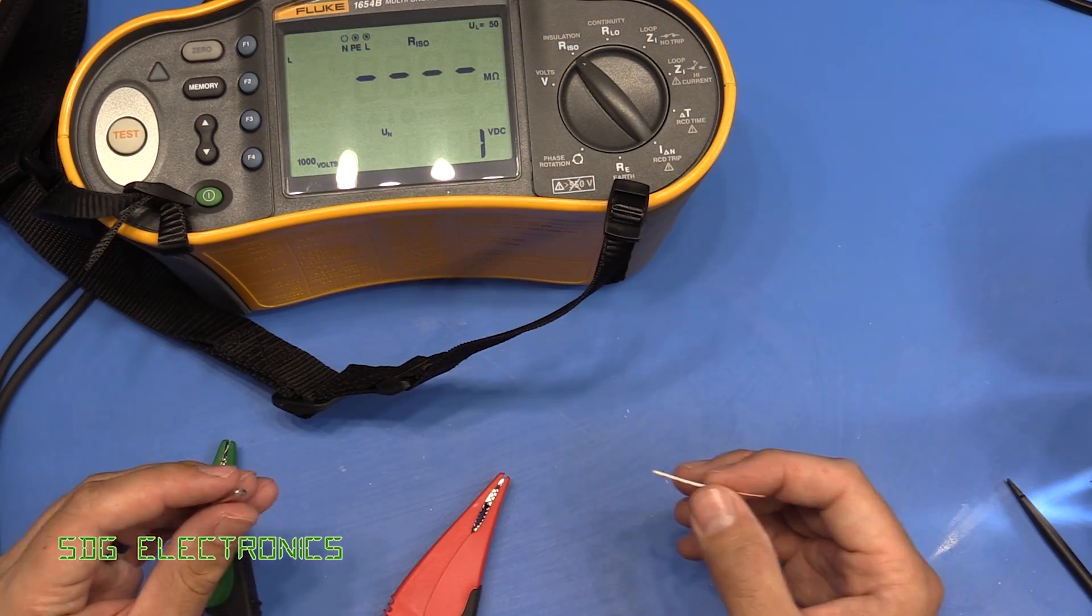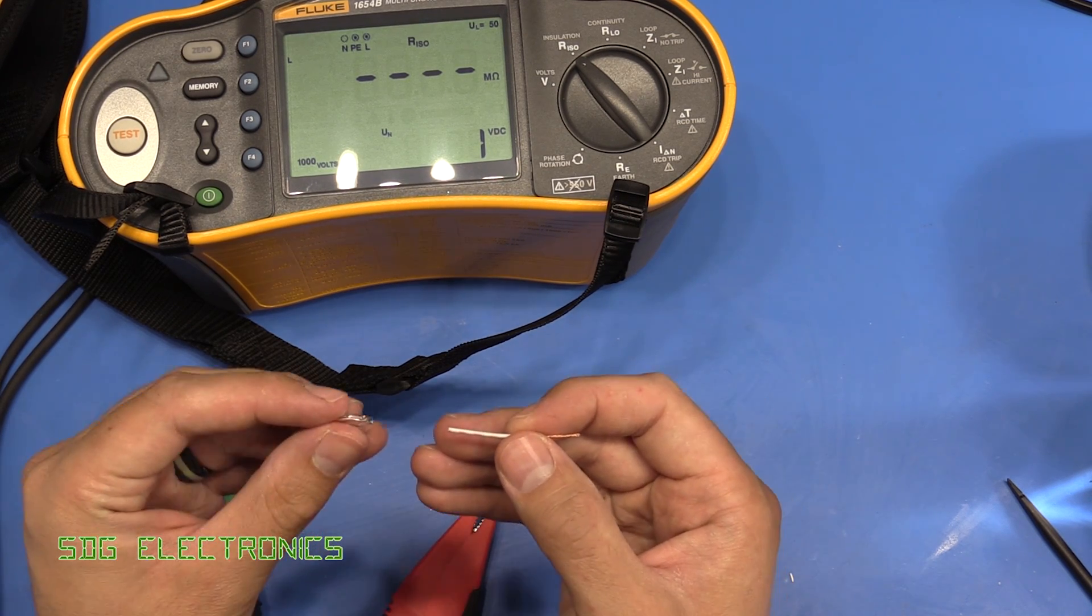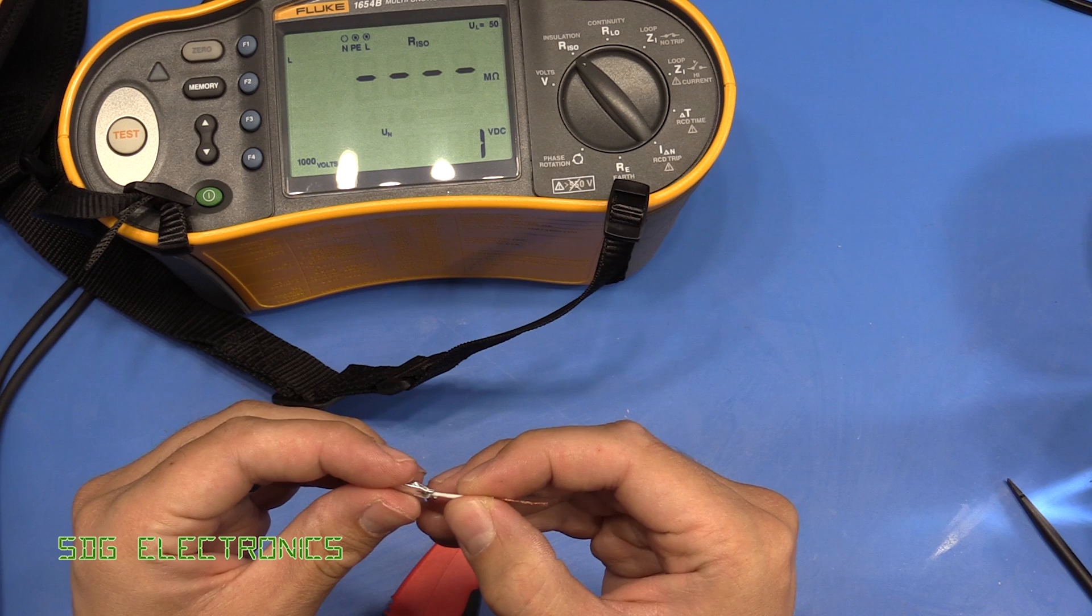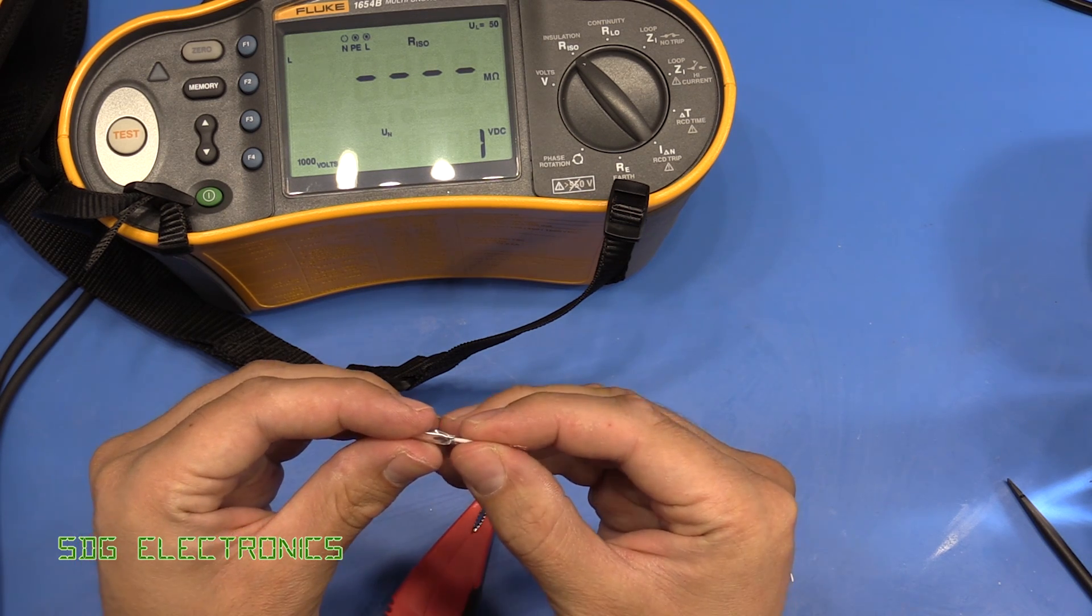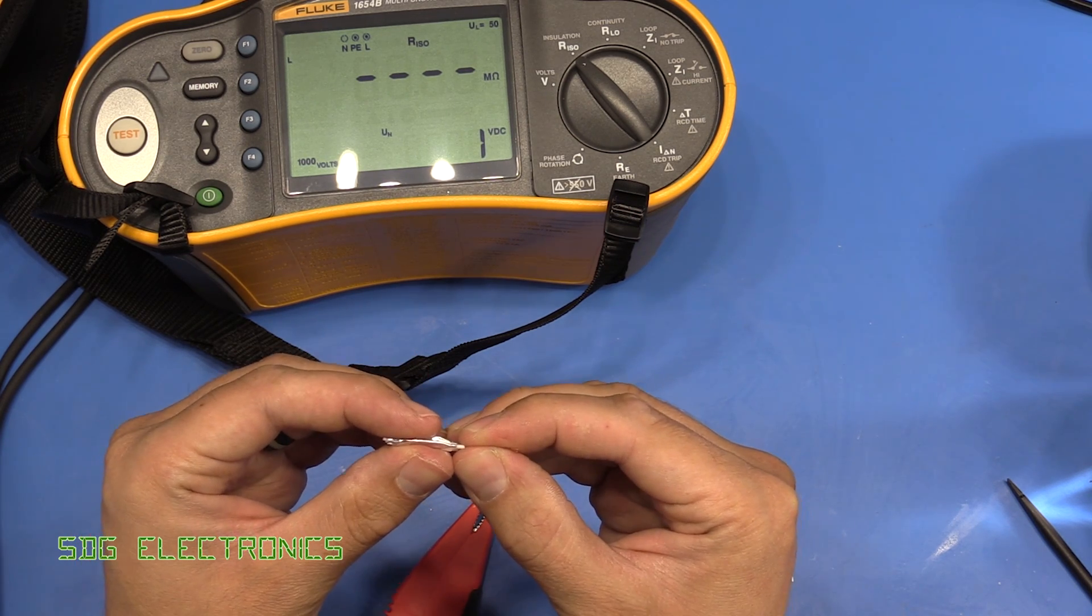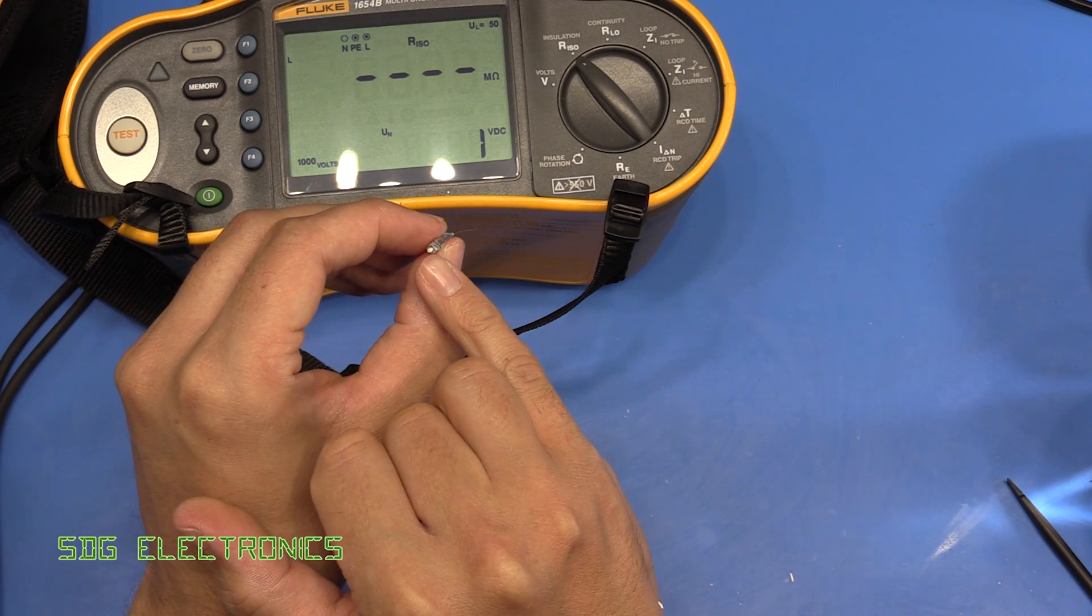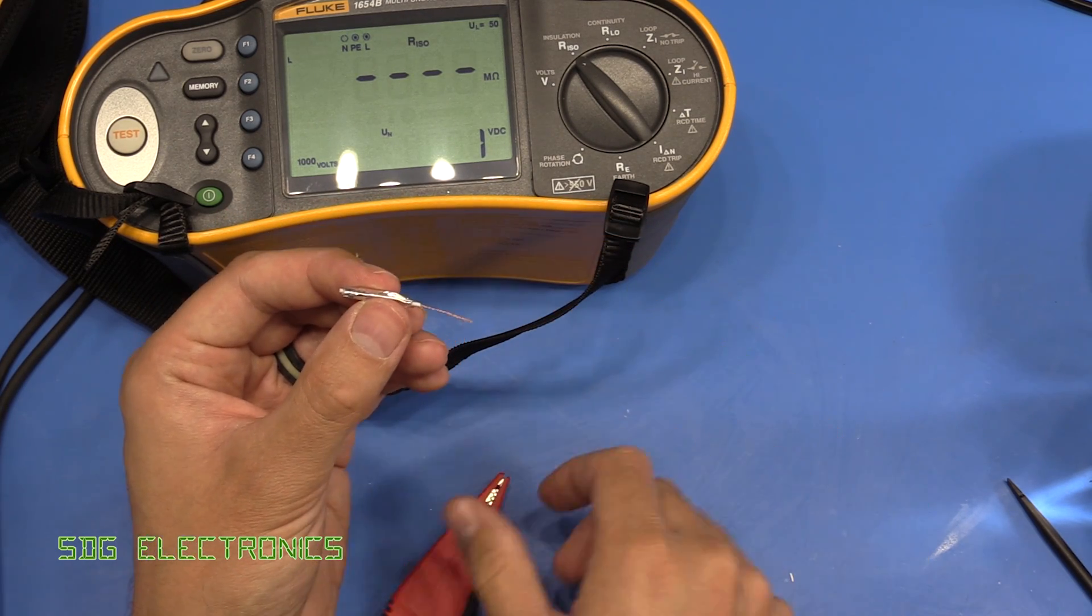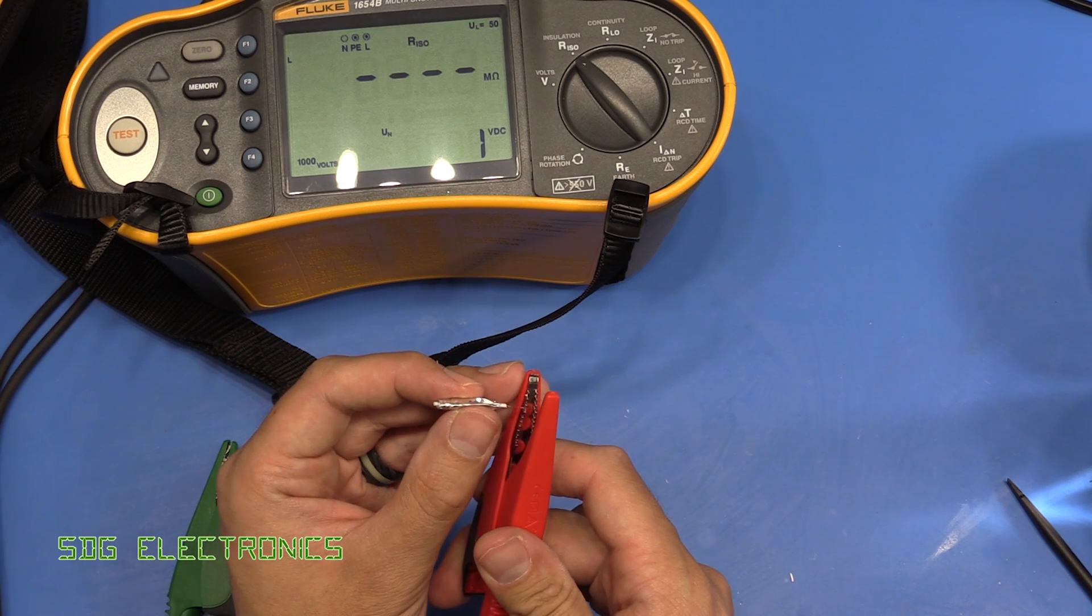I thought it might be interesting just to see if we can get the insulation to break down. I've got a bit of foil which I'm going to wrap around the wire here just around the insulation, and that's just poking out the end so there's no contact directly between the foil and the inner conductor. We'll see if we can get the insulation to break down.